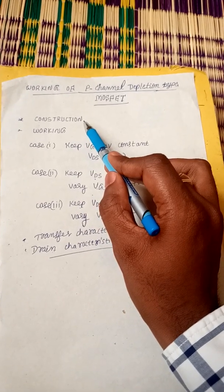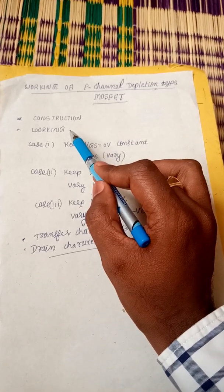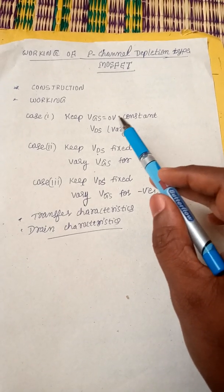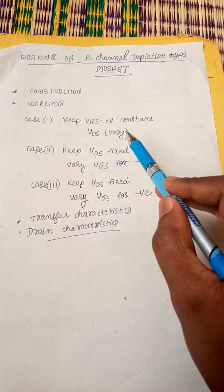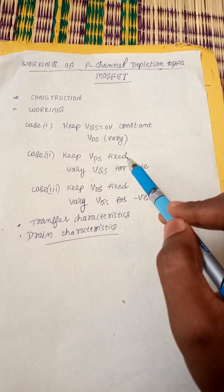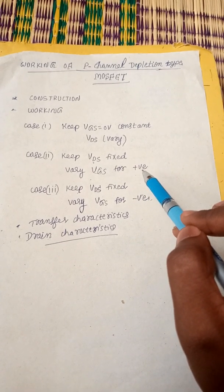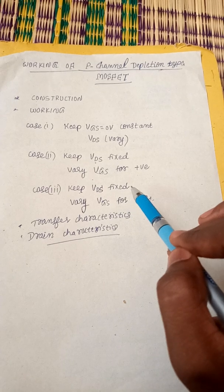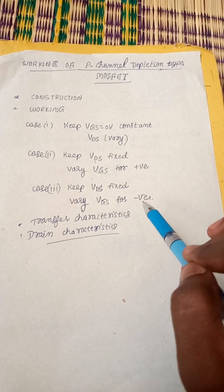In today's class we are going to cover: the construction of P-channel depletion type MOSFET and its working. Under working, there are three cases. First case: keep Vgs equal to 0 volt constant and vary VDS. Second case: keep VDS fixed and vary Vgs by making gate voltage positive. Third case: keep VDS fixed and vary Vgs by making gate negative.